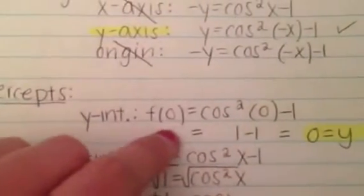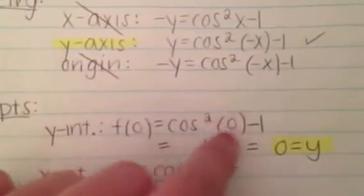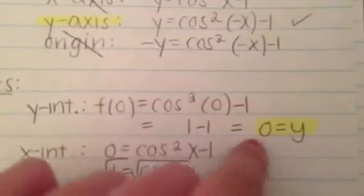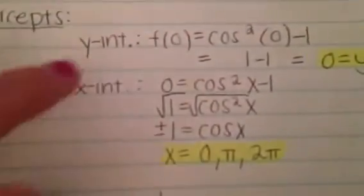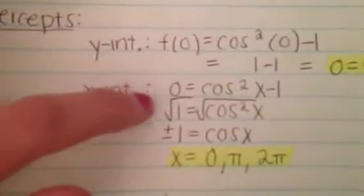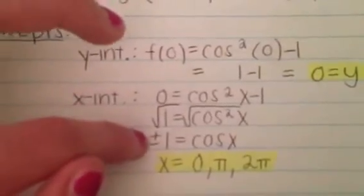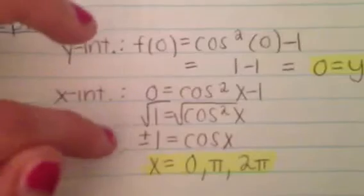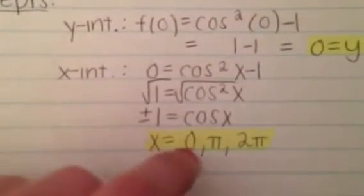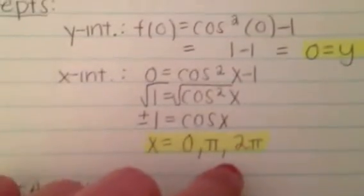Next are the intercepts. For the y-intercept, set x to 0: cosine squared of 0 minus 1 equals 1 minus 1 equals 0. So there's a y-intercept at y equals 0. For the x-intercept, set y equals 0 and take the square root of both sides, giving cosine of x equals positive or negative 1. That gives x equals 0, pi, and 2 pi.